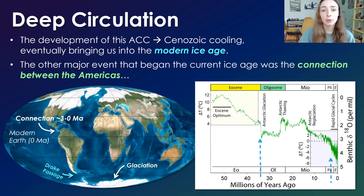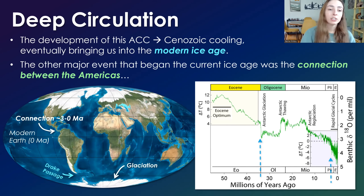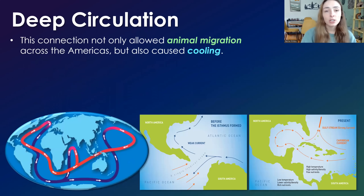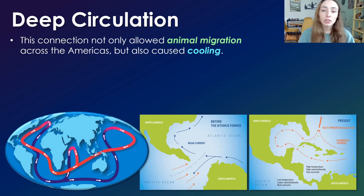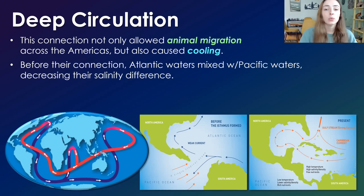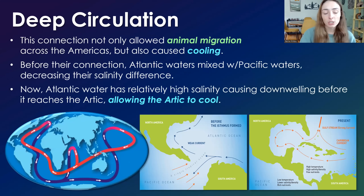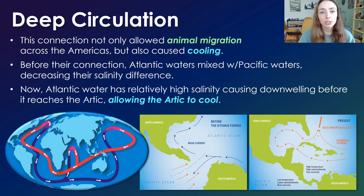The other major event that helped this along occurred around 3 million years ago: the connection between North and South America. This connection not only allowed for migration of animals across this boundary and biodiversification in their respective continents, but also caused or exacerbated the cooling. Before the connection, the Atlantic waters mixed with Pacific waters, decreasing their differences in salinity. With the connection in place, the Atlantic water has relatively high salinity, causing downwelling before it reaches the Arctic and allowing the Arctic to cool.